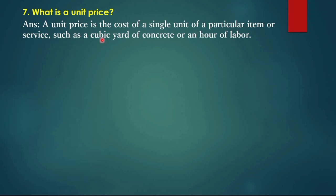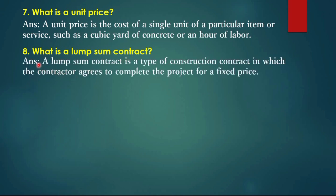A unit price is the cost of a single unit of a particular item or service, such as a cubic yard of concrete or an hour of labor. Question 8: What is a lump sum contract? A lump sum contract is a type of construction contract in which the contractor agrees to complete the project for a fixed price.